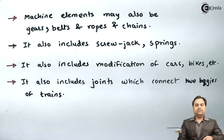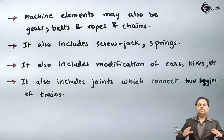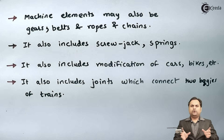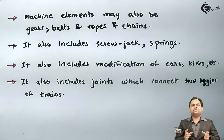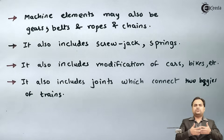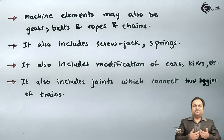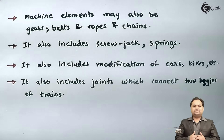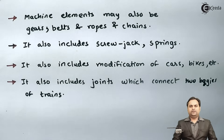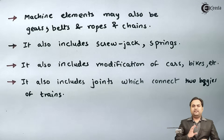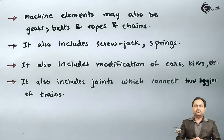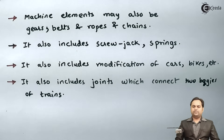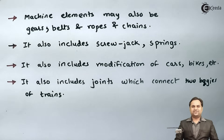Machine design also includes joints which connect two bogeys of trains. A train consists of a number of coaches or bogeys, and when we want to connect two such coaches, we use joints between them. That joint is called a knuckle joint and it is designed with the knowledge of machine design. So we can analyze the wide range of applications where machine design is used.